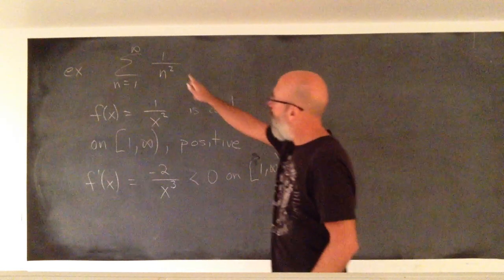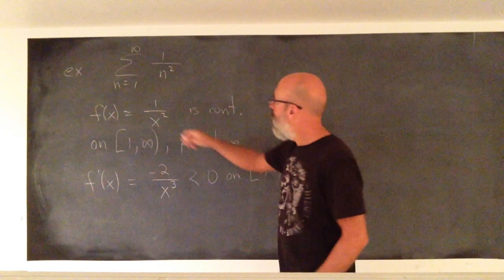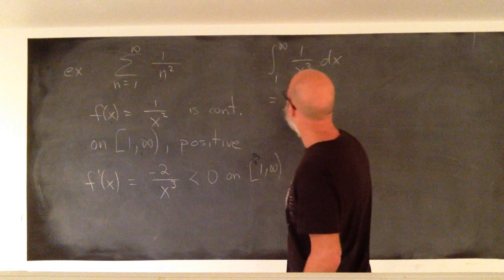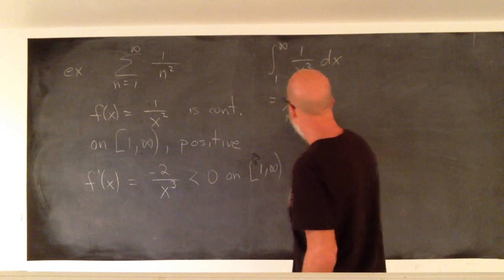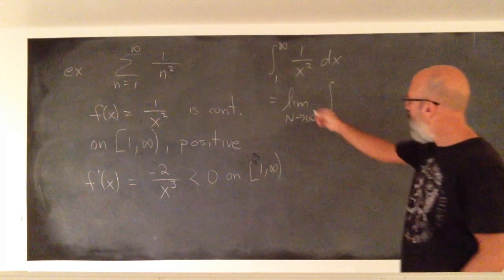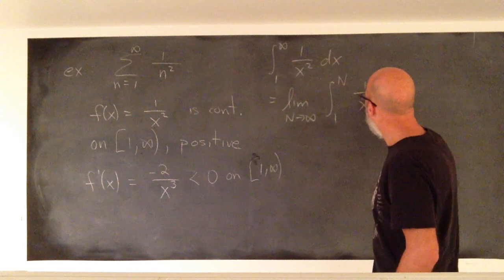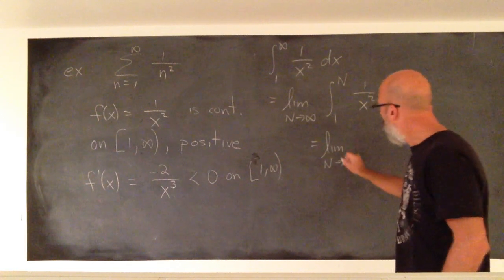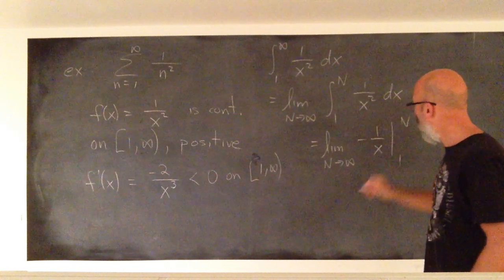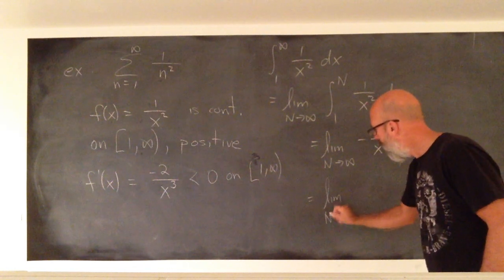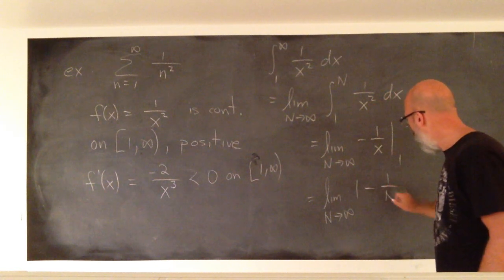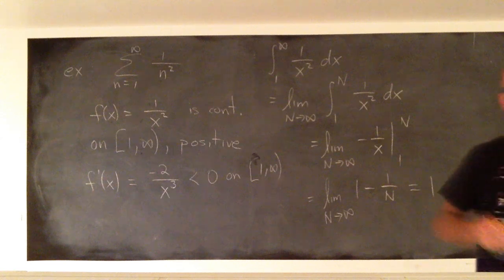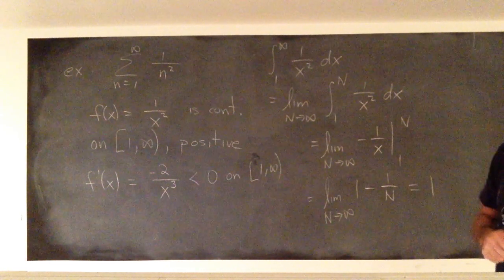So the series will converge if and only if the integral converges. Let's evaluate the integral. This is an improper integral, so it's the limit as n goes to infinity of the integral from 1 to n. The antiderivative gives negative 1 over x from 1 to n, which is 1 minus 1 over n. As n goes to infinity, this goes to 0, so the whole limit is 1. The integral converges, so the series converges.